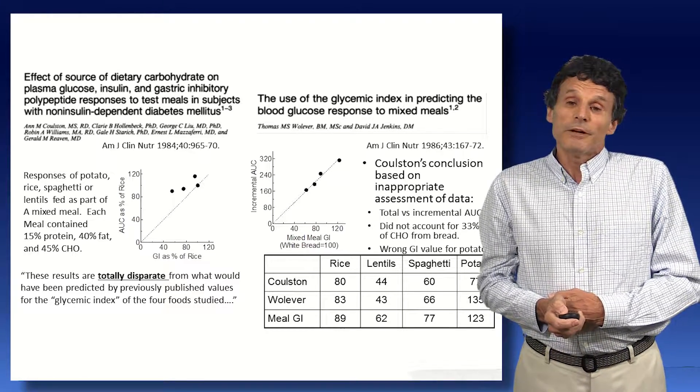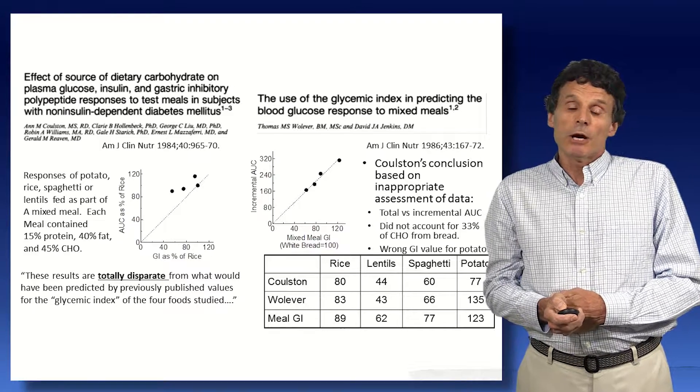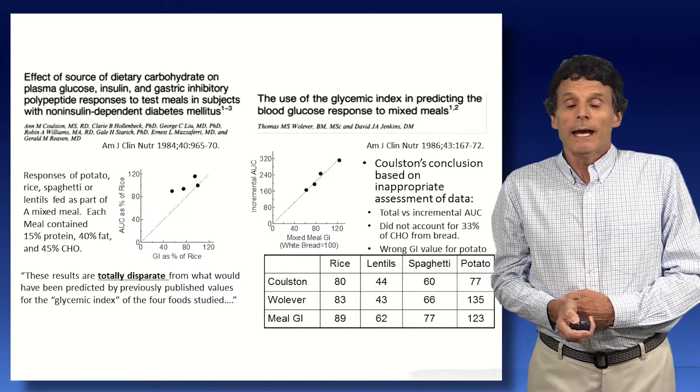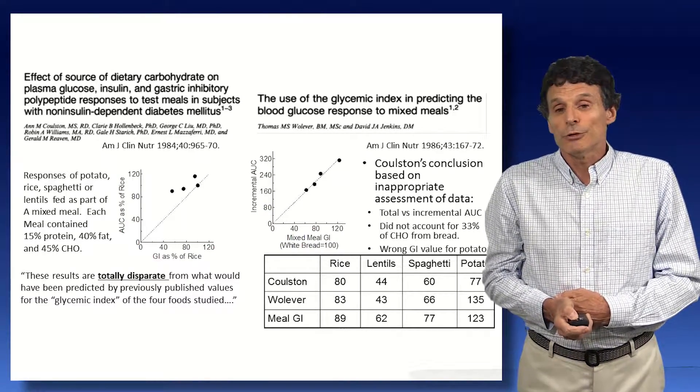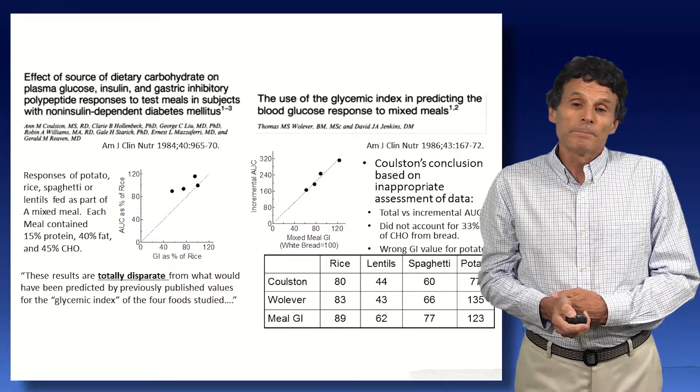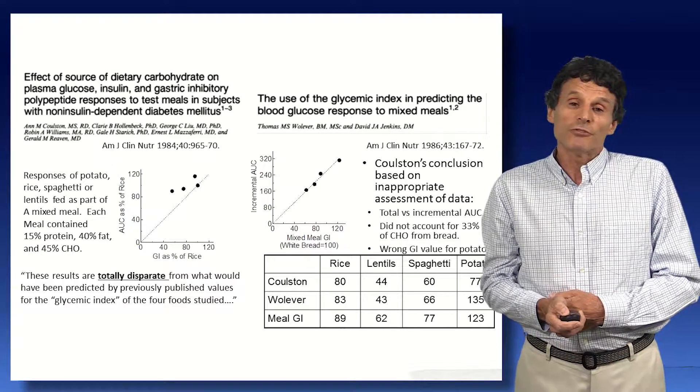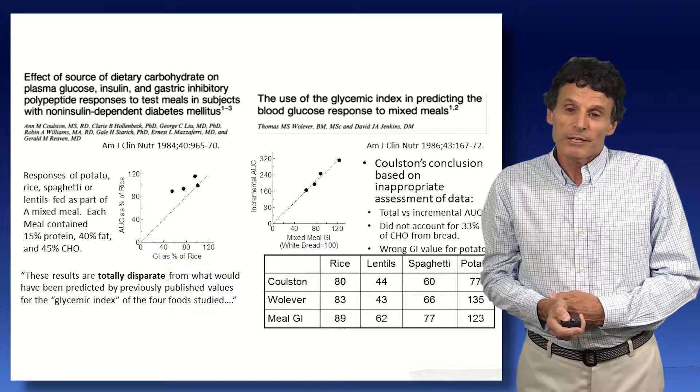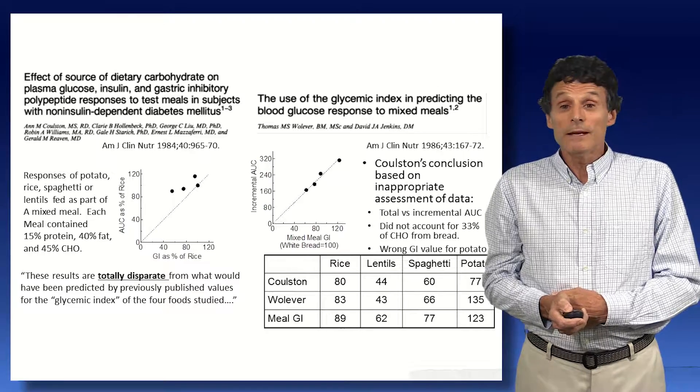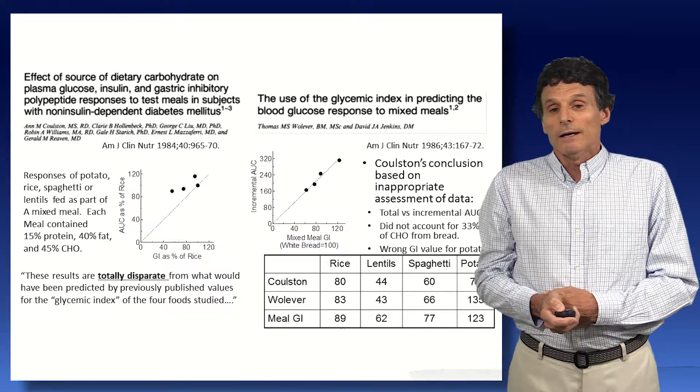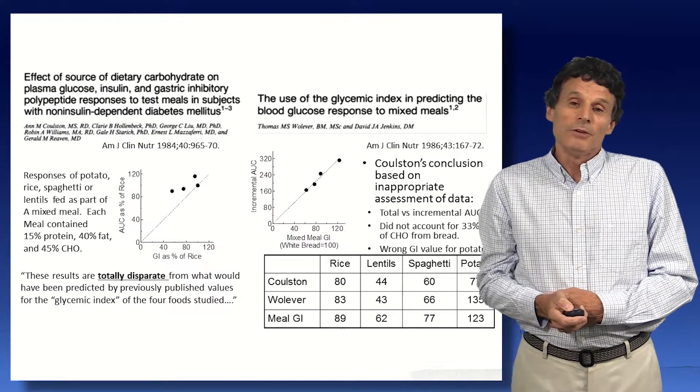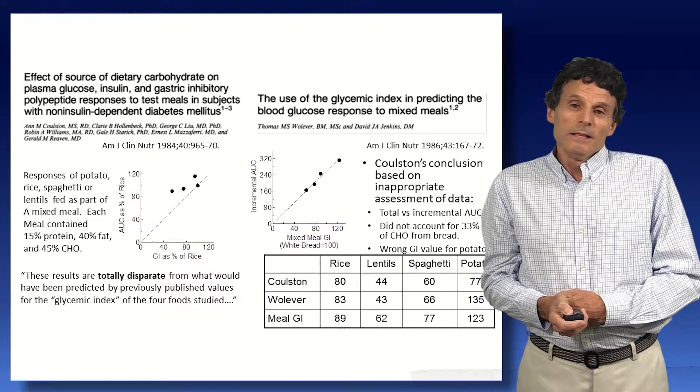We also felt that Coulston et al. did not account for the carbohydrate which was present in every meal from bread. A third of the carbohydrate was the same in every meal. And I thought they used the wrong value for potato. I showed you earlier how they found that potato in their hands gave a glycemic response the same as glucose. Coulston used a value of 77, which we'd published from England. I felt they should use 135, which they had found. And then when we take account of the bread, that reduces the differences a little between for the meal. And I found that, in fact, the meal GI was virtually perfectly associated with the AUC.